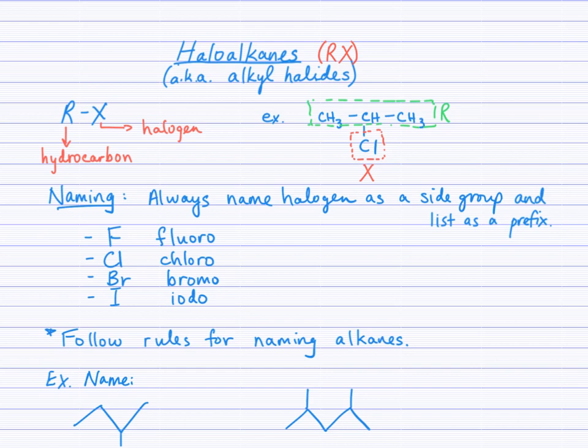To name haloalkanes, we follow the same rules as for naming alkanes. Just be aware that whenever you see a halogen, it's always named as a side group, which means it will always be listed as a prefix in the name.